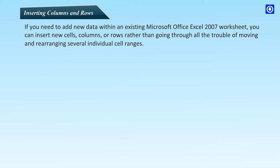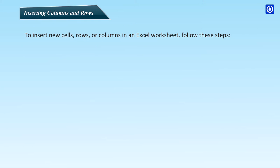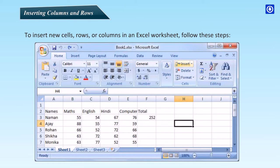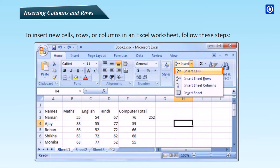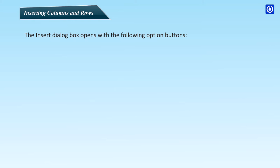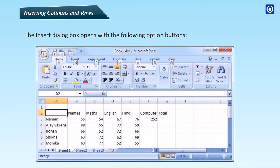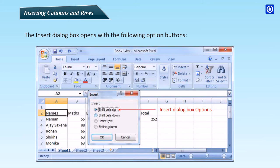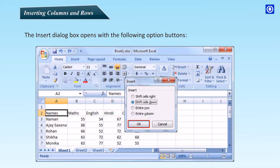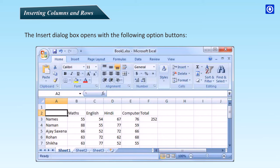Inserting columns and rows: if you need to add new data to an existing Excel worksheet, you can insert new cells, columns, or rows rather than rearranging individual cell ranges. Select the cells, rows, or columns where you want the blank cells to appear. Click the drop-down button on the Insert command in the Cells group of the Home tab, then click Insert Cells. The Insert Dialog box opens with options: Shift Cells Right — shifts existing cells right; Shift Cells Down — shifts existing cells down.